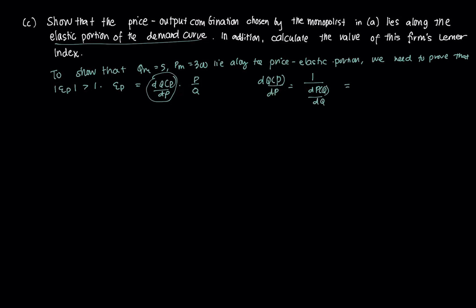That's going to be 1 over this derivative here. Our function from before is P equals 400 minus 20Q. Taking the derivative of that with respect to Q, that's negative 20. And that's going to be equal to negative 1 over 20.